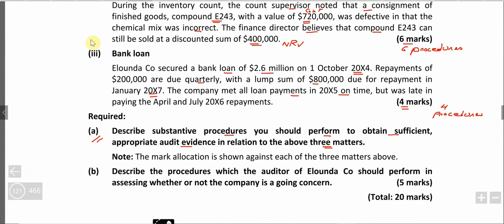Substantive procedures are very important for the exam. Make sure you have a grip on them: first understand the concepts, then review the notes for vocabulary — words like inspect, review, schedule, non-current asset schedule — as these are the documents you need to mention. Then try to write procedures yourself and check against the answer. Part B relates to going concern and review, which will be covered later.